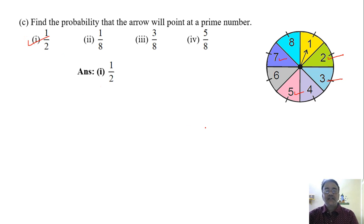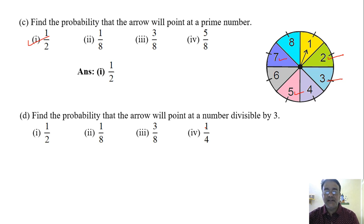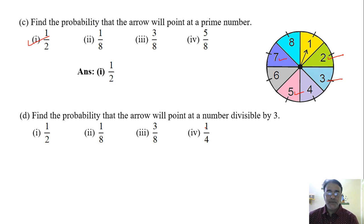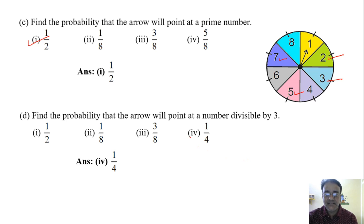Now the fourth question: find the probability that the arrow will point at a number divisible by 3. So how many numbers are divisible by 3 here? 2. So what is the probability? 2 by 8, which is 1 upon 4. So which option is the correct one? The fourth one.